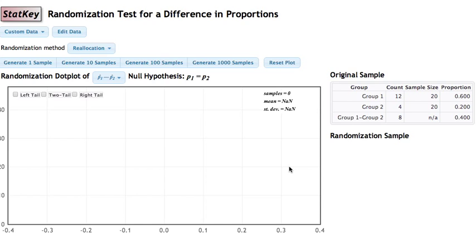We press OK and now have our data loaded in. You'll notice we have the summary statistics from our original sample: 12 out of 20, that's a proportion of 0.6. 4 out of 20 is a proportion of 0.2. And we have a difference in proportions of 0.4.